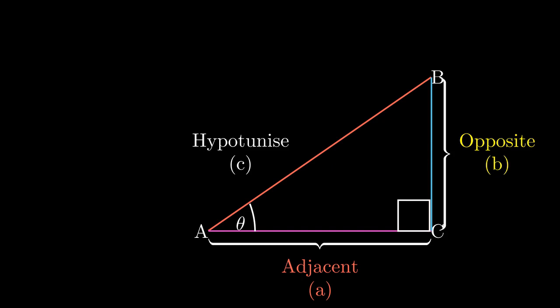What makes the side a and b be the adjacent and the opposite is the position of our angle theta. We can see here that AC is adjacent because it's adjacent to the angle theta, and BC is the opposite because it's directly opposite to the angle theta.